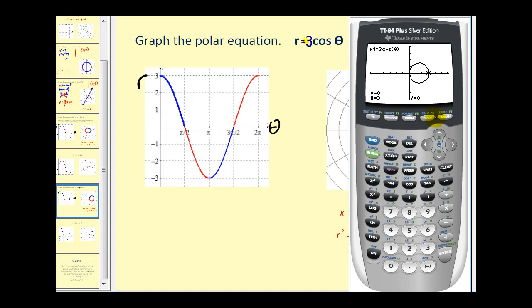If we trace it, you can see from zero to 90 degrees, we're plotting those points. From 90 to 180, we're plotting those points. And then again, it repeats.